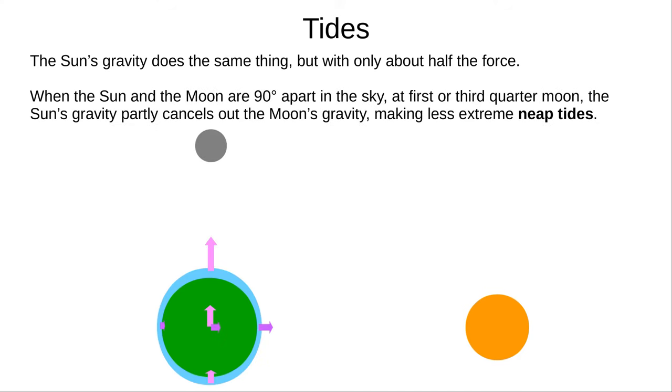When the Sun and Moon make a 90 degree angle in the sky, at first or third quarter moons, the Sun's gravity partly cancels out the effects of the Moon's gravity. High and low tides are less extreme. These are called neap tides.